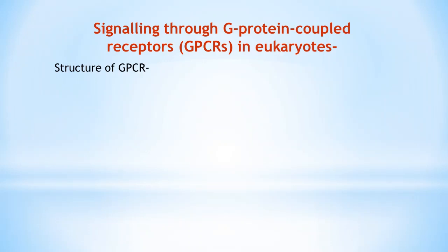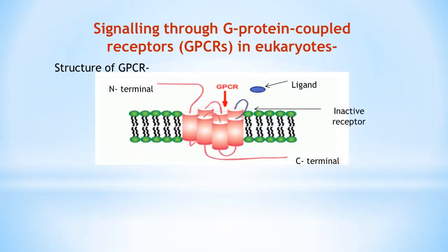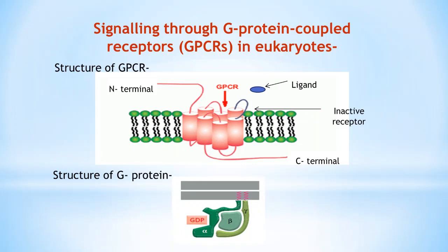Although different types of signaling molecules can activate GPCRs, the structure of all GPCRs is quite similar. A GPCR consists of a single polypeptide chain that passes back and forth across the lipid bilayer seven times, which is why it is also called a serpentine receptor. They all use trimeric GTP-binding proteins called G proteins to relay signals into the cell interior. About half of all known drugs work through GPCRs or the signaling pathways that GPCRs activate.